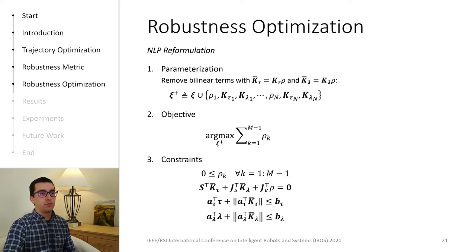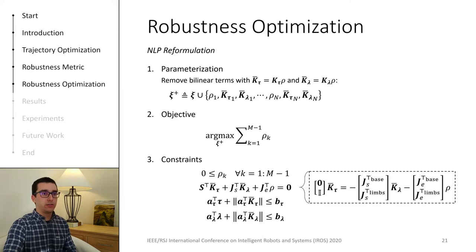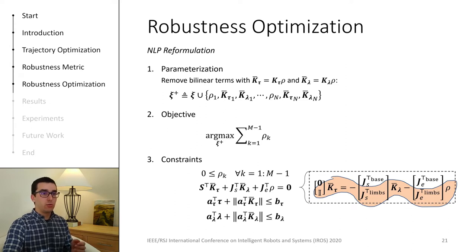But there is a way to make the problem simpler, and it is by exploiting the problem structure. You see, in fact this equality right here is made up of stacked Jacobians, and we can reorder the terms and split it into two parts. The top part concerns only the floating base of the robot, and the bottom part concerns the legs and arm of the robot. By doing this, we can see that kTAU can actually be obtained as a function of kLambda and rho. And therefore, we do not need to have kTAU in the decision variables. Also, by obtaining kTAU in this way, the bottom part of the equality is satisfied implicitly, so we don't even need it anymore.